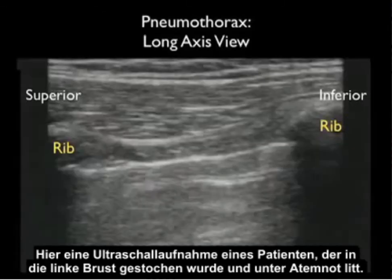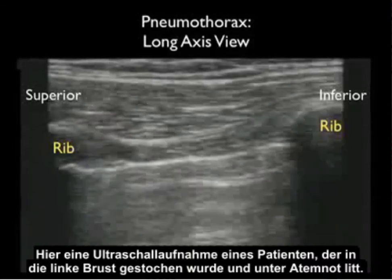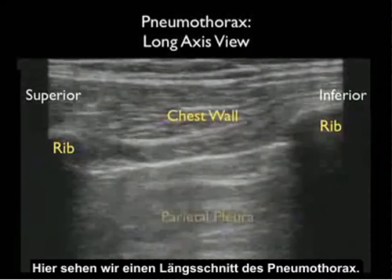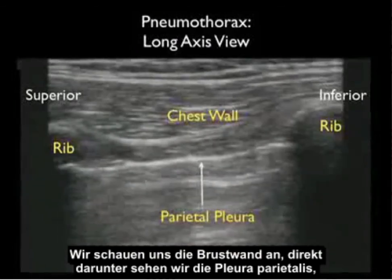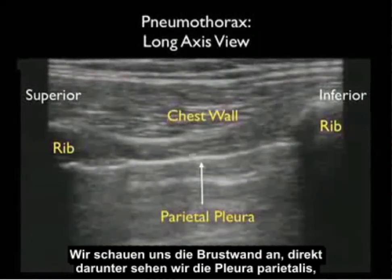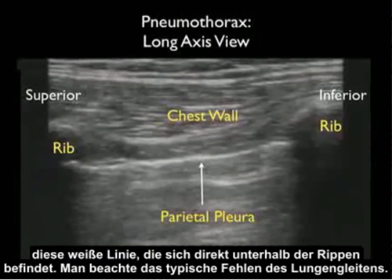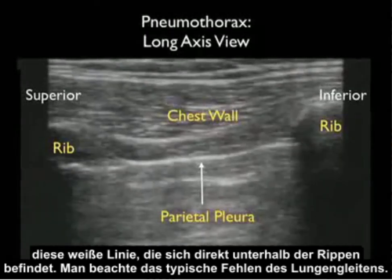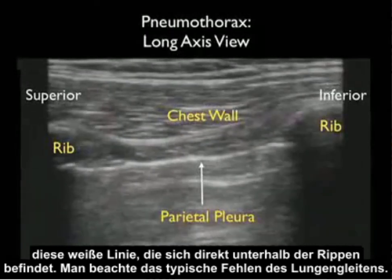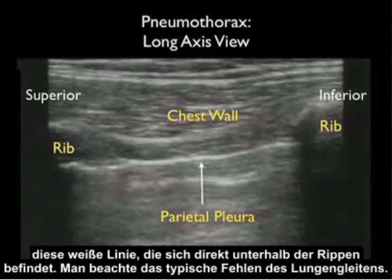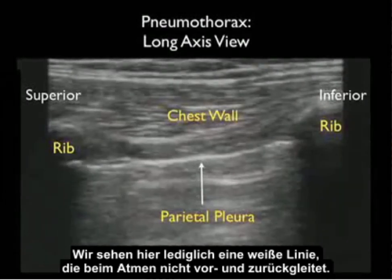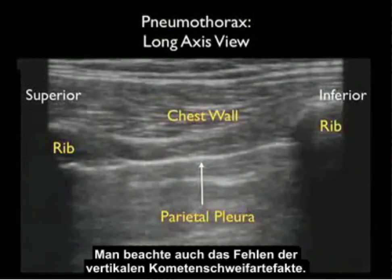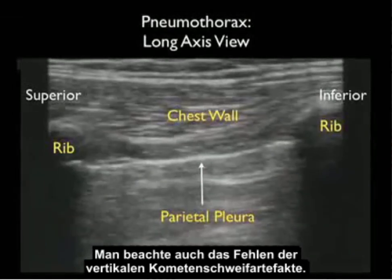Here's an ultrasound image taken from a patient who was stabbed to the left chest and who had shortness of breath. What we see here is a long axis view of a pneumothorax. Looking at the chest wall anteriorly, right below that we see the parietal pleura — the single white line located directly inferior to the ribs — but notice the classic lack of lung sliding. All we see is a single white line that fails to slide back and forth as the patient breathes. Notice also the absence of the vertical comet tails.